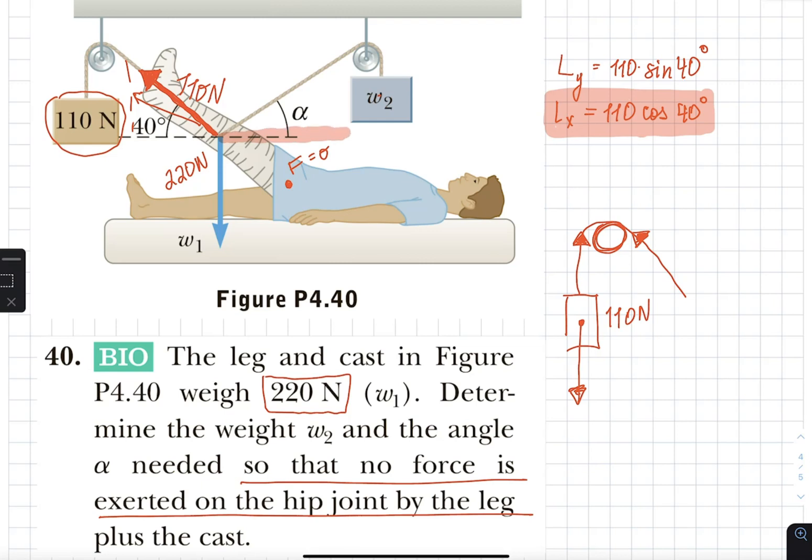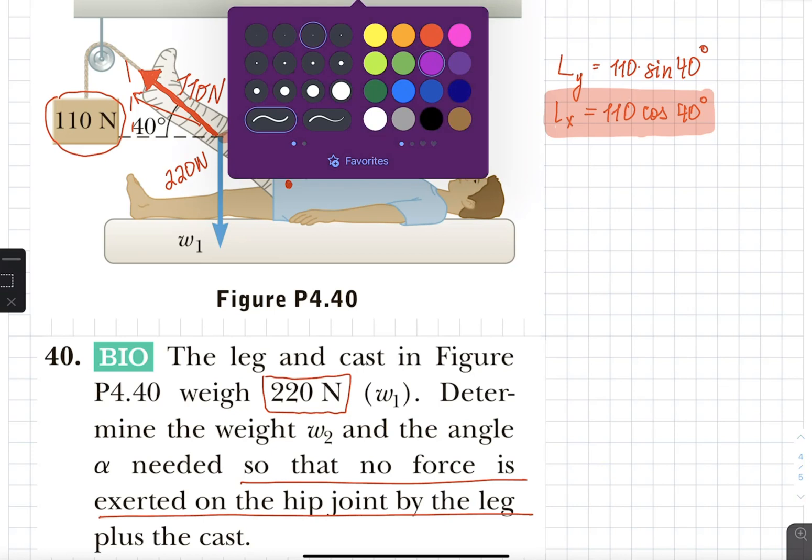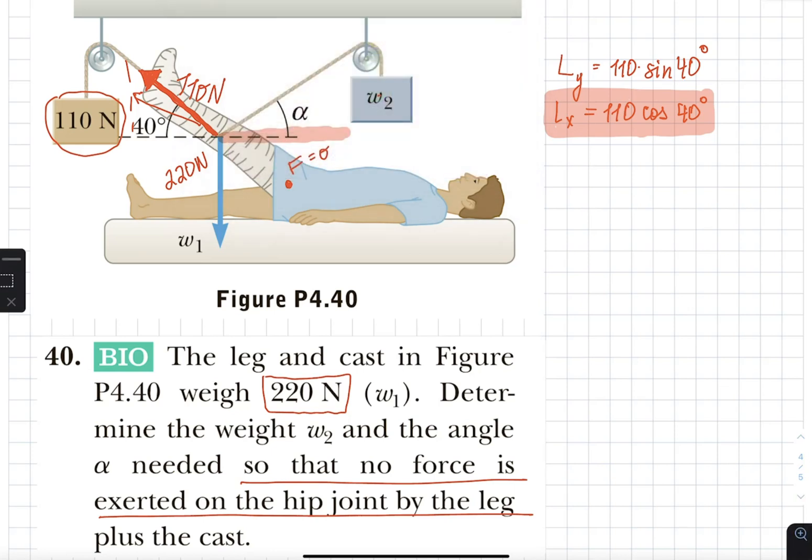So now I have to figure out my force on the right and that one has actually two components and two variables. I do not know the angle or the force itself. So I am just going to say right x is going to be right, meaning the value of the vector times cosine of angle alpha. I am not sure what angle alpha is either.